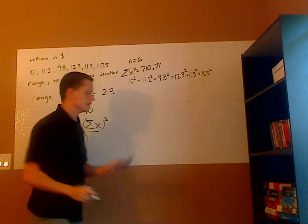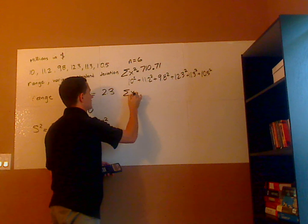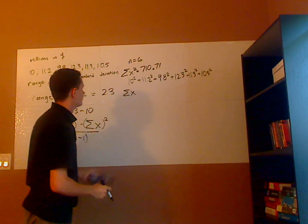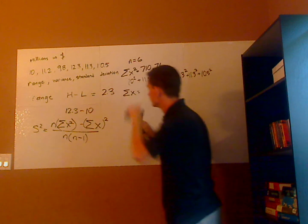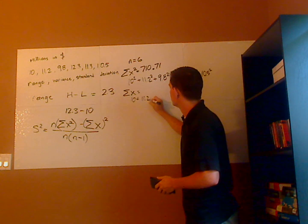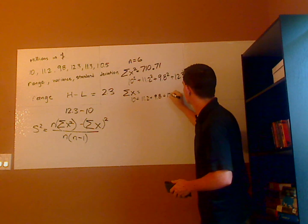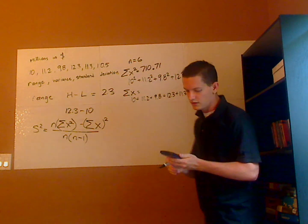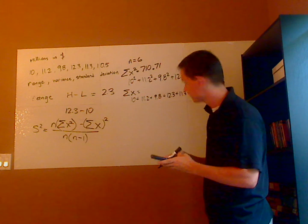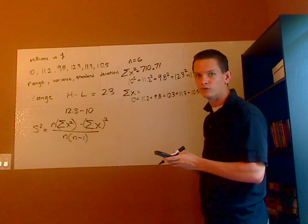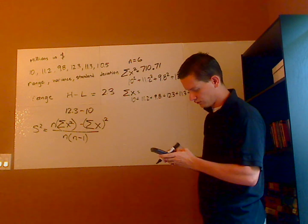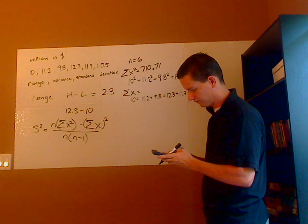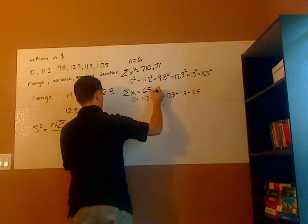So next I'm going to calculate the summation of x and I need the summation of x squared. So I'm going to add all these up. Let me write that so you can see what's going on. So that's 10 plus 11.2 plus 9.8 plus 12.3 plus 11.3 plus 10.5, and that gives me 65.1.